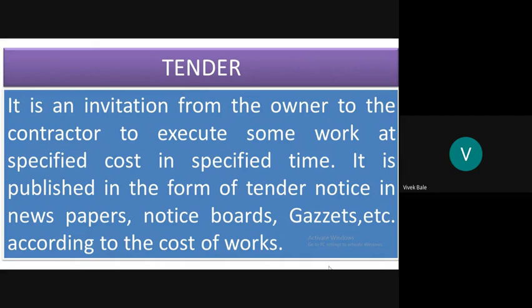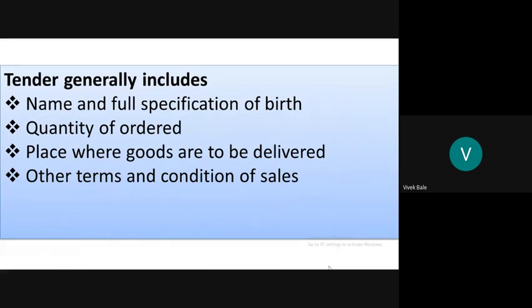A tender generally includes: first, the name and full specification of goods or services; second, quantity of order — that is, how much quantity has been ordered by the owner; third, the place where goods are to be delivered; and fourth, other terms and conditions of sale. Every tender should include these four points, as they help to understand what is to be delivered, the quantity, the place of delivery, and the terms and conditions.